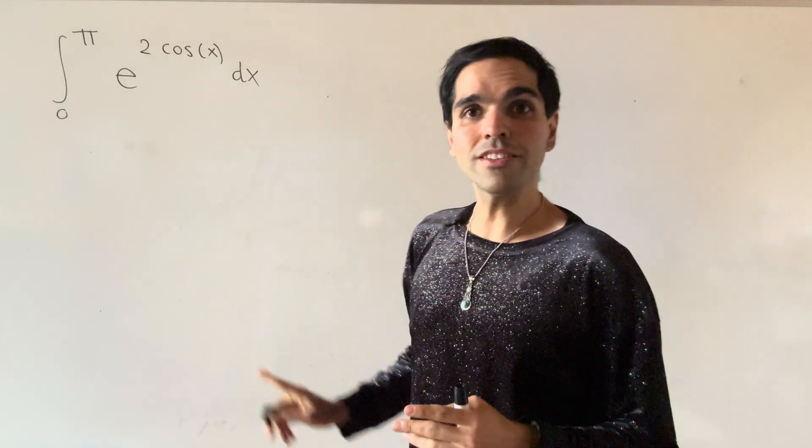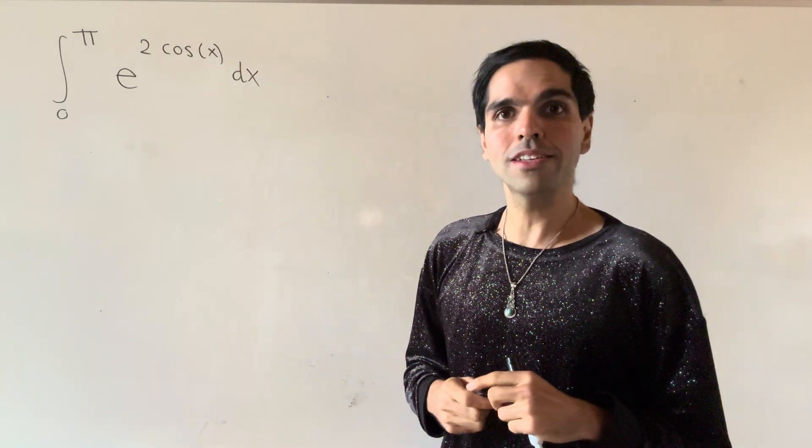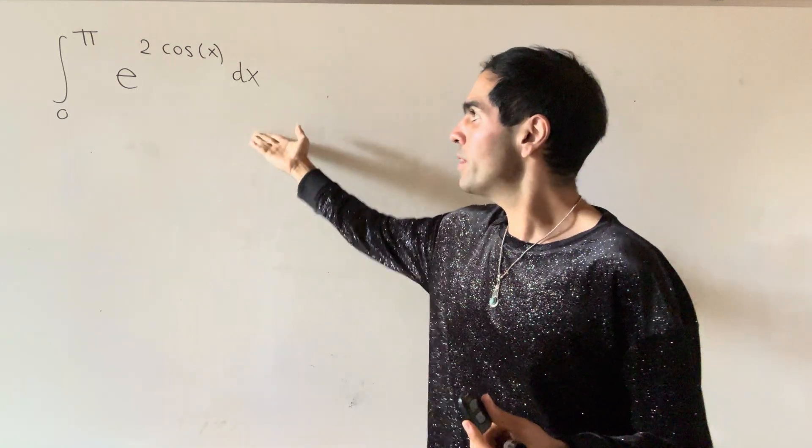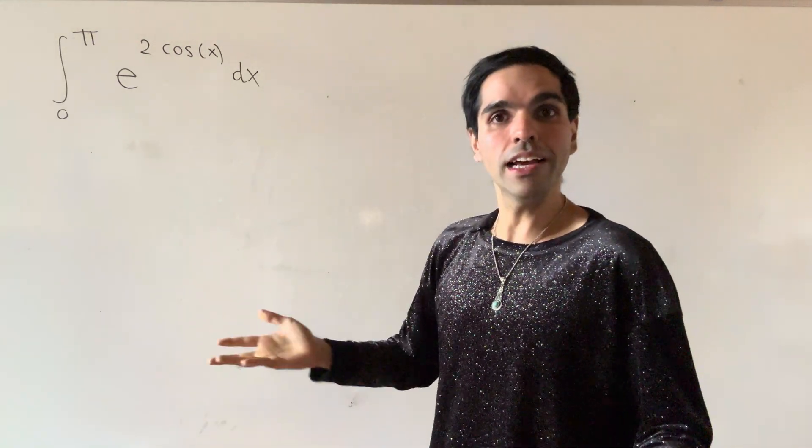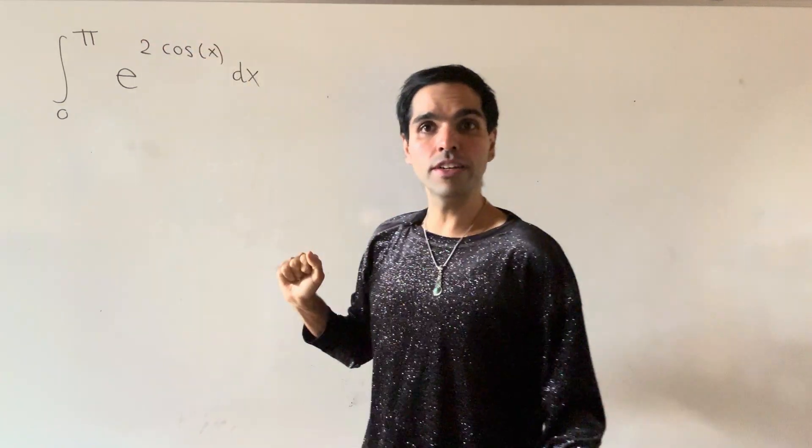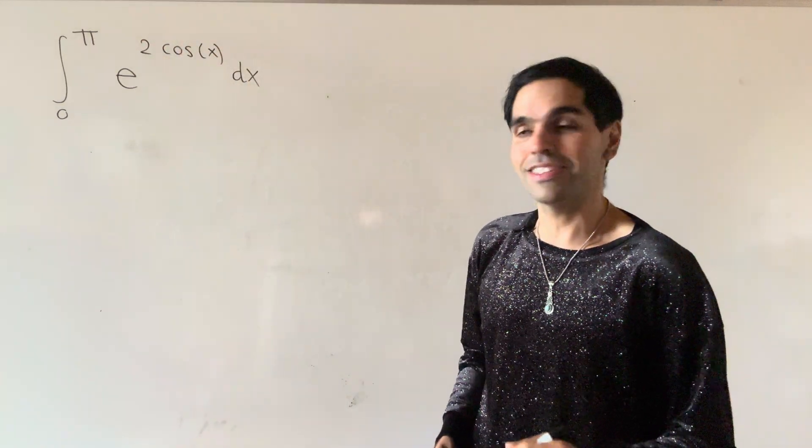All right, thanks for watching. And here's an integral with a really surprising answer because I thought I've seen it all, but then I saw this integral and I didn't see it all. So let's evaluate the integral from zero to pi of e to the two cosine x dx.